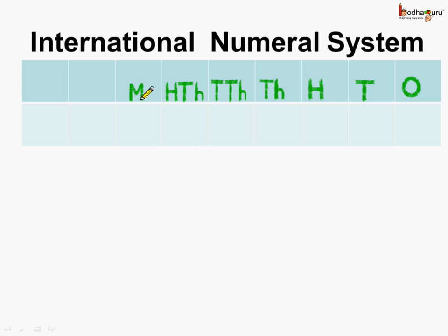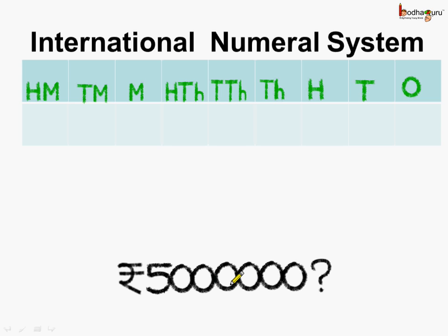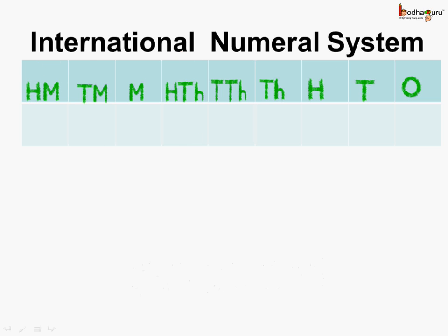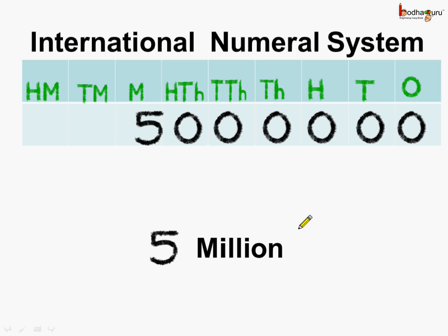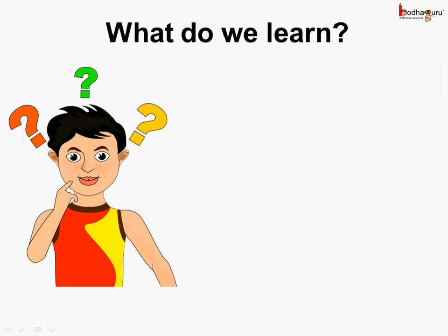Then comes million, which is basically a thousand thousands, then ten million, and then hundred million. Let us place this number under the international numeral system place value chart. Here we have five million, so this number can be read as five million.